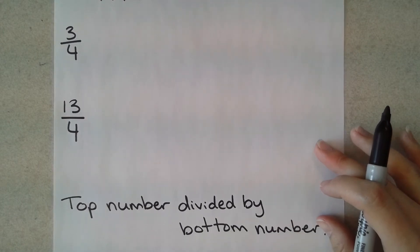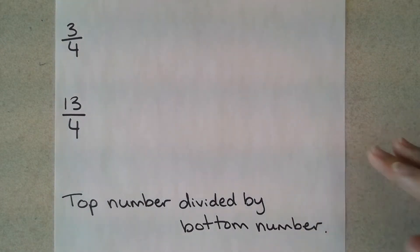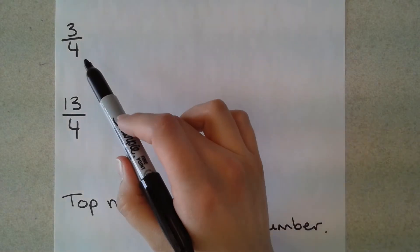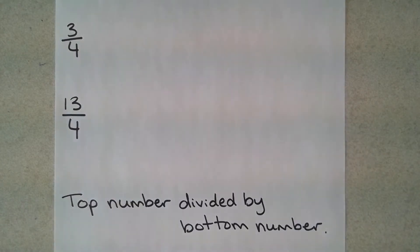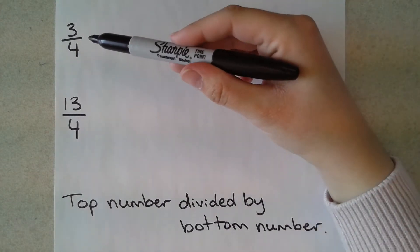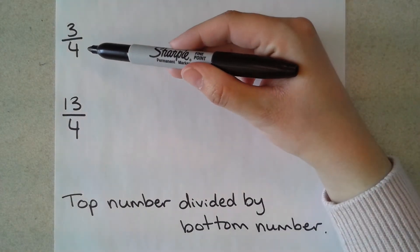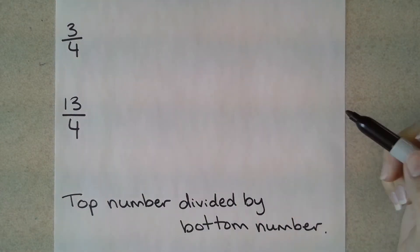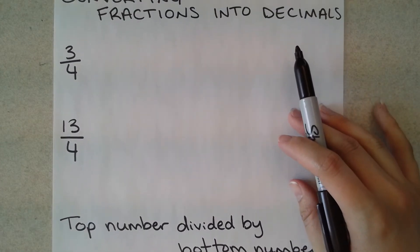Converting fractions into decimals is pretty easy — it really only has one step. I made a little note at the bottom here: you're going to do the top number divided by the bottom number, and that's going to be your only step every time whenever you want to convert a fraction into a decimal.